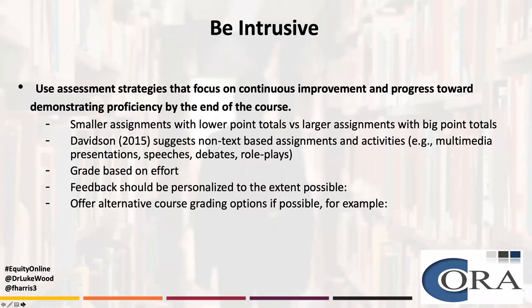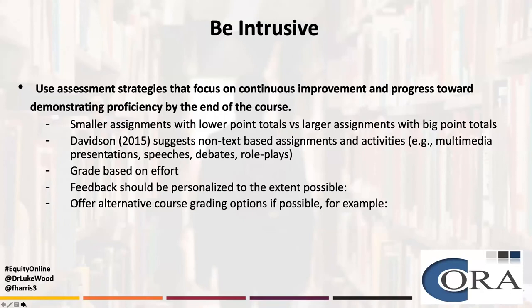You can also offer alternative course grading options — for example, if approved by your institution, consider whether you can do a satisfactory progress or pass/no-pass. These have financial aid implications, so don't do anything not in alignment with your existing university policy, because you don't want to simultaneously create greater disproportionate impact for students who are athletes or who need certain classes to transfer or to go on to graduate programs. It's complex, so whatever you do should be done in consultation with your department chair, your dean, and your vice president of instruction or provost.